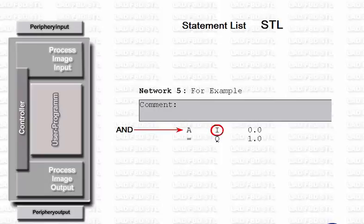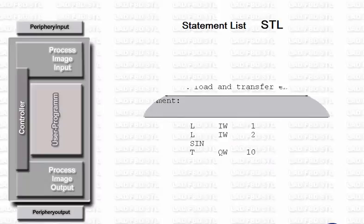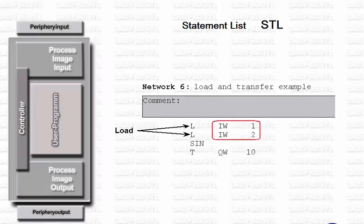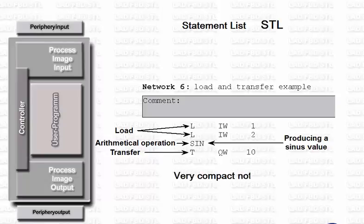Likewise, the operator — for example a process input or output, or a memory bit — is easily interpretable. Digital operations are processed in Statement List by loading digital variables, such as two integers, and combining them, for example by an arithmetical operation. The result is then transferred into memory. The advantage of using Statement List is the very compact notation of the automation task in hand, which saves user memory resources.